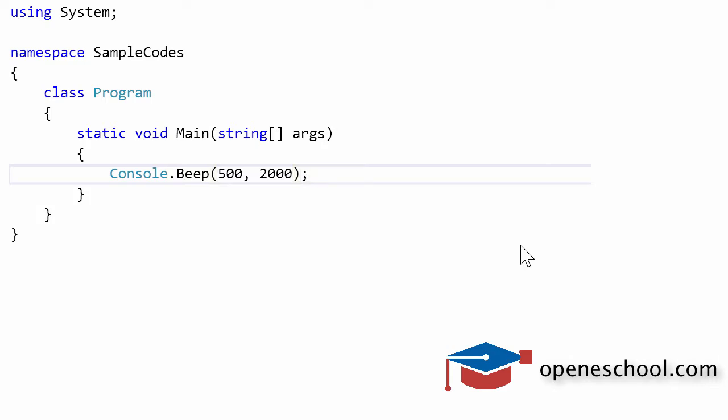If you run this program, you will hear a beep which is at 500 hertz frequency for two seconds. Anywhere in your program wherever you want to give some alert to the user, you can use this Beep function given to you by the Console class. You can tell it what frequency you want that sound to be generated, and you can tell for how much duration should that sound be generated.